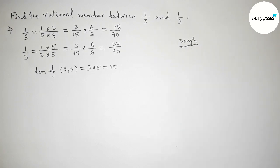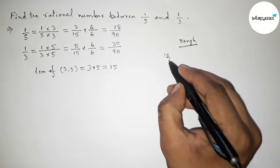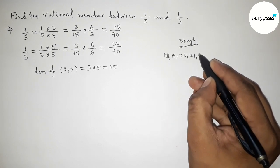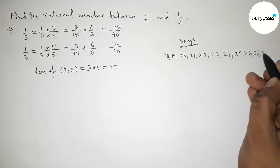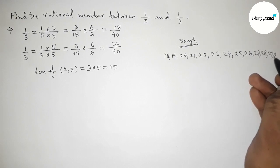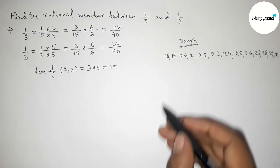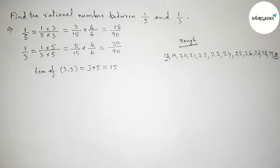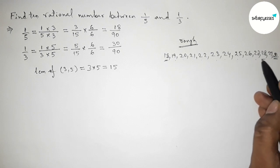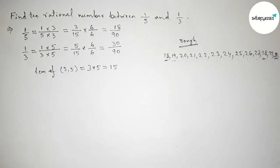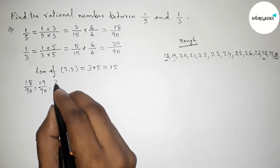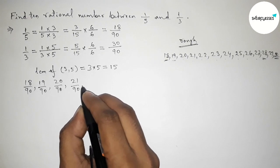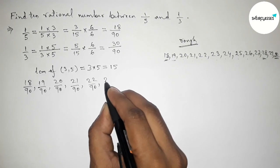Now both denominators are equal. Between 18 and 30 we can get 11 integers, but we only require 10. So we take integers from 19 up to 28 — you can go up to 29 or 28 as your choice, but here I am taking up to 28.